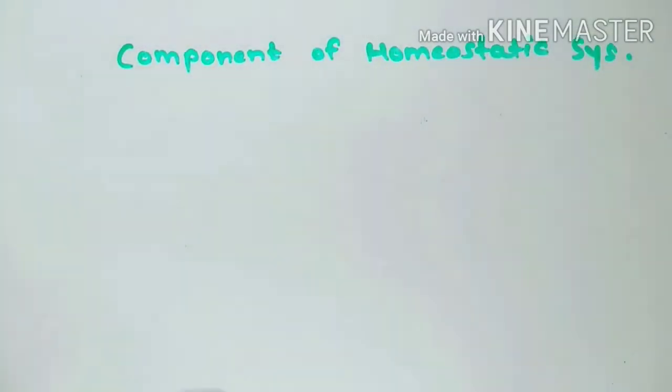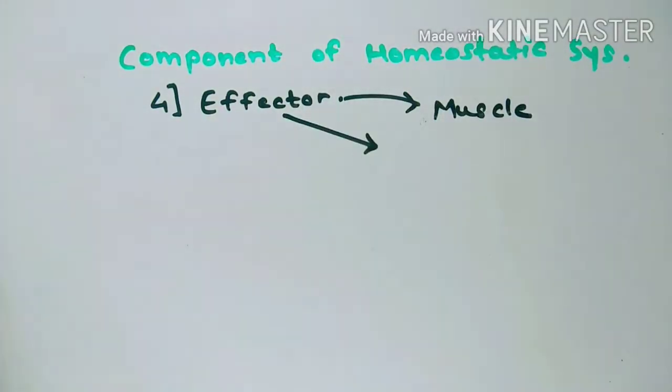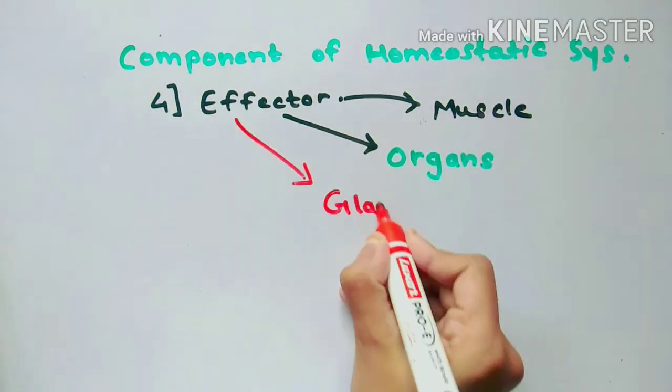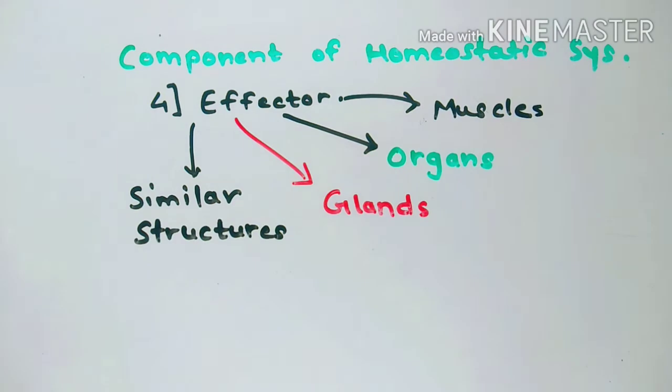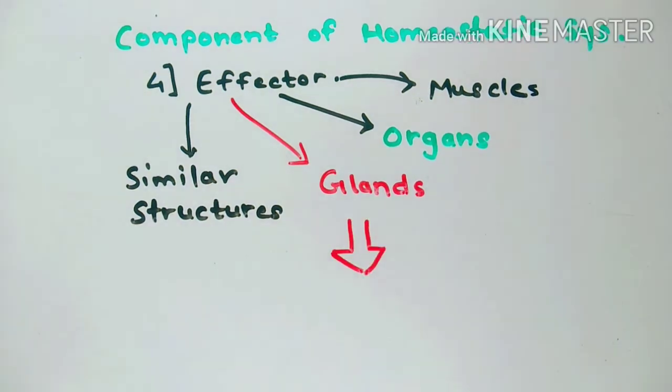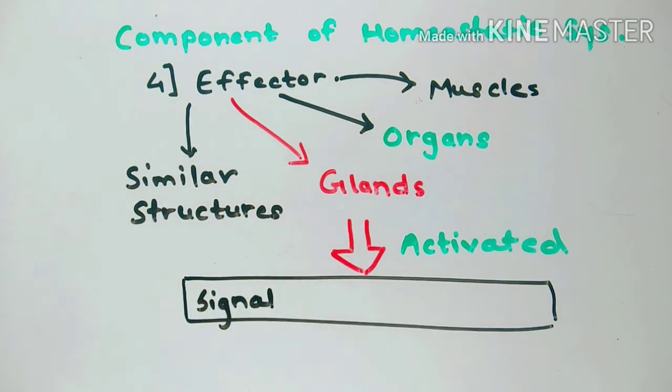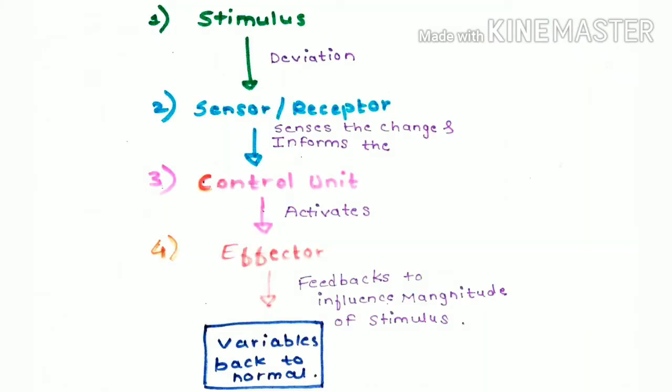Fourth component, that is effectors. Now effectors can be muscle, organ, or gland or similar structures that are activated as a result of signal from the control unit. Response of effector feedback to influence magnitude of stimulus and return the variable back to normal, giving us life.